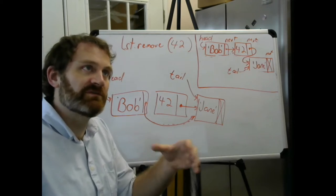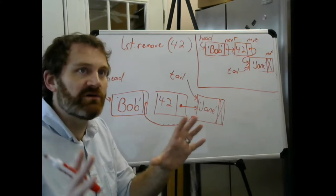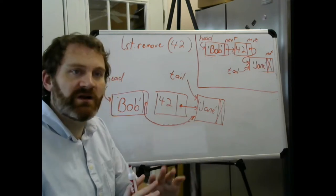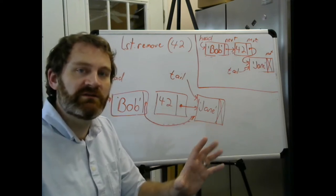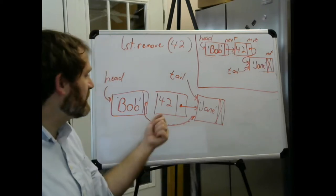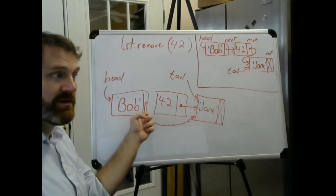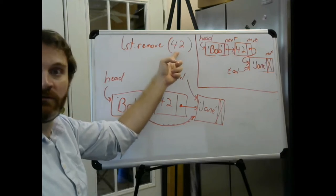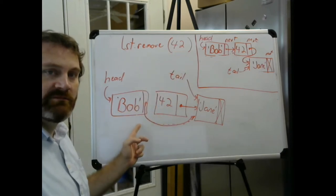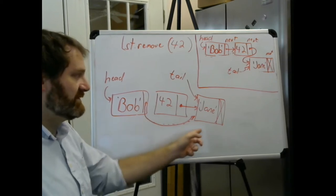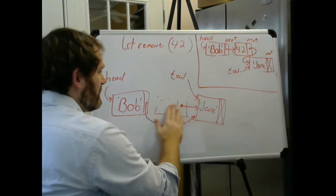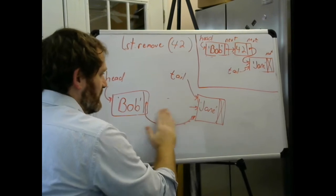You don't have to call the delete keyword or anything like that. You just say: all variables that point to you, I'm going to have them looking at something else. So if we're trying to remove 42, we've got to find 42 and we've got to tell Bob to point to Jane instead. And that effectively will wipe 42 out of this list.